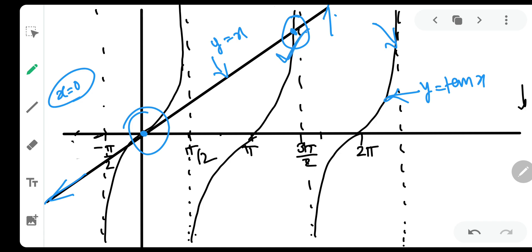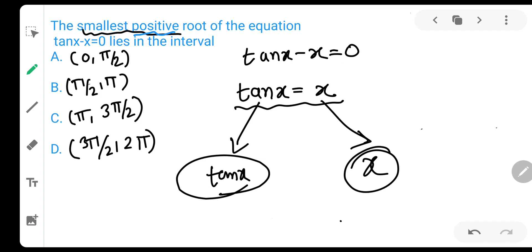So we got this point as our answer. We don't know what this point is exactly, but if we drop a perpendicular, you can see that this particular point is lying between the interval π to 3π/2. And yes, this is our answer: the smallest positive root lies in the interval π to 3π/2. Hence our correct option is option C.